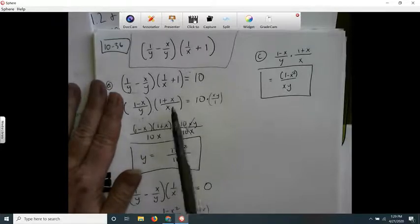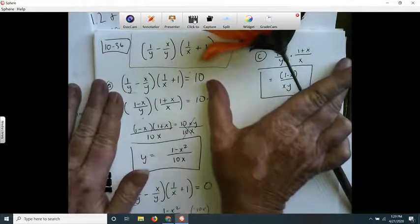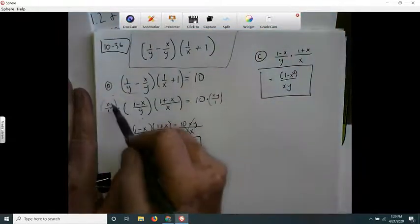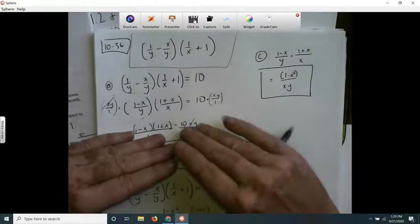So I multiply both sides by x times y. These will both cancel out, and this gives me 10xy over here. Then I saw that I could just have the y by itself.